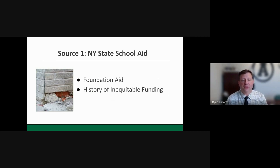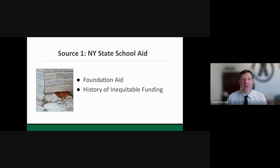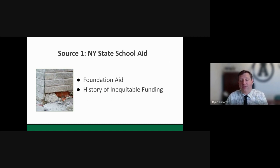When I say New York state school aid, there are a number of components: transportation aid, building aid, special education aid — all coming together as one total. The most important component is what's called foundation aid — the foundational amount the state must provide given its expectations to deliver a sound basic education. I also want to share some information about how New York state, unfortunately, does not have a great track record when it comes to a practice of equitable funding. New York state is famously challenged to provide equitable funding.